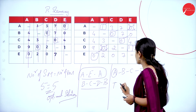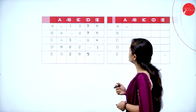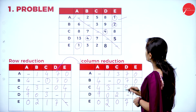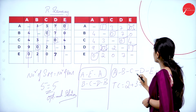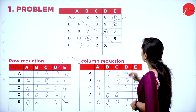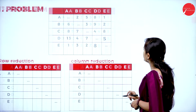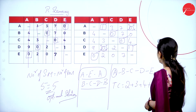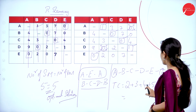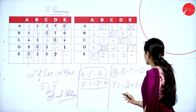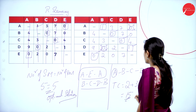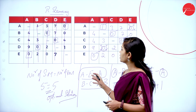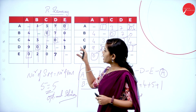Now find the total cost using original matrix values. A to B = 2, plus B to C = 3, plus C to D = 4, plus D to E = 5, plus E to A = 1. Total: 2+3=5, 5+4=9, 9+5=14, 14+1=15. The total is 15 kilometres. This is the final value — the inspection method has been applied successfully.